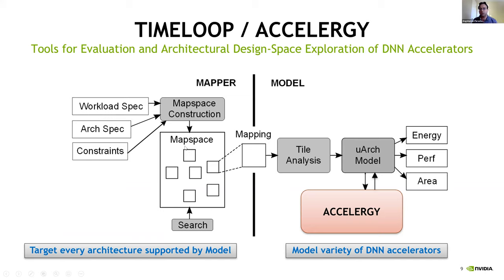This feeds into the infrastructure we've built — the combination of Timeloop and Accelergy. The broad idea is two halves: the model half, which contains Accelergy, whose intent is to model a variety of DNN accelerators, and the mapper half, whose intent is to find an optimal mapping. The mapper must be able to target every single architecture that the model is able to model.